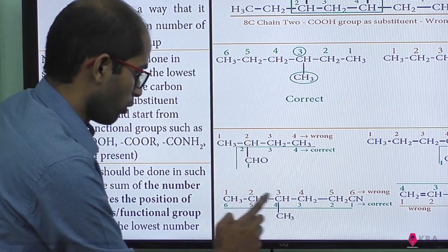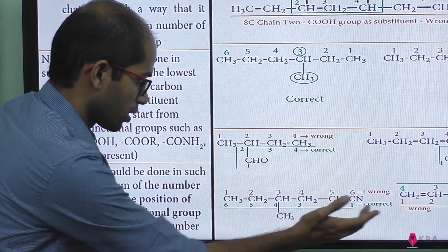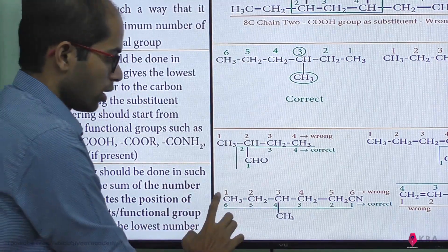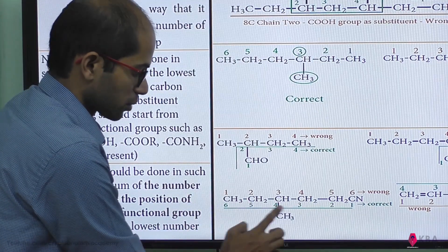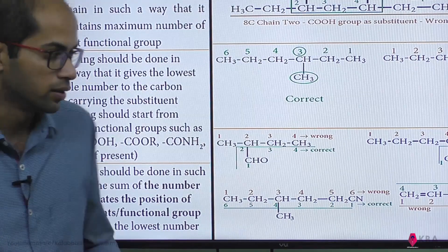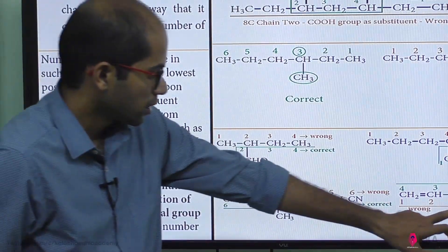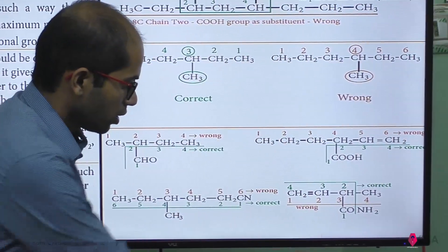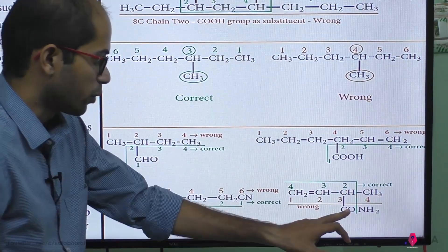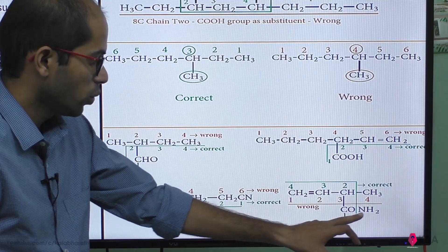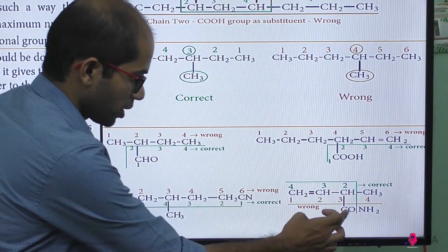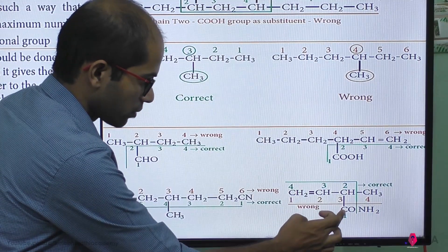So numbering goes 1, 2, 3, 4, 5, 6. The numbering gives the substituent the first preference event. Now, first reference is number one, so we count: 1, 2, 3, 4, 5, 6 — this is the number one consideration.